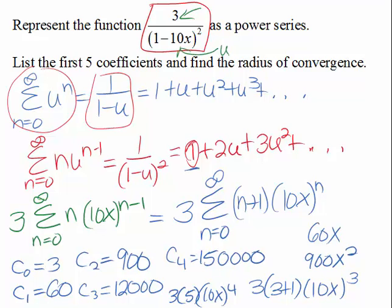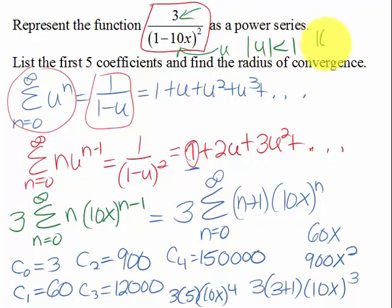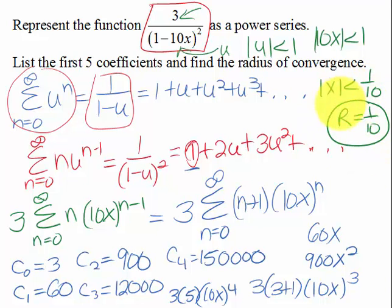Okay, our last thing we want to do then is we want to figure out the radius of convergence. And the radius of convergence is the same for a power series and its derivatives. So we are going to be able to say the absolute value of u needs to be less than 1. And in our case, the u was 10x. So the absolute value of x needs to be less than 1 tenth. So our radius of convergence is 0.1 or 1 tenth.